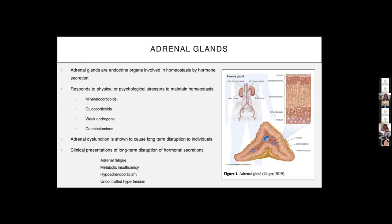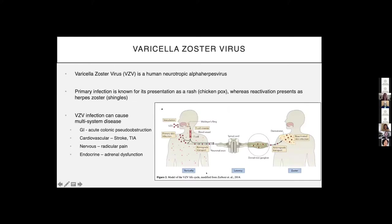One stressor that has been shown to cause long-term disruption and adrenal dysfunction are viral infections. One group in particular, the alpha herpes viruses, has been shown to cause this. Varicella zoster virus is a human neurotropic alpha herpes virus whose primary infection is known as chickenpox. The virus then travels in the bloodstream and transaxonally to remain latent in sensory ganglia until it's reactivated as herpes zoster or shingles. VZV infection can cause multi-system disease, including adrenal gland dysfunction.